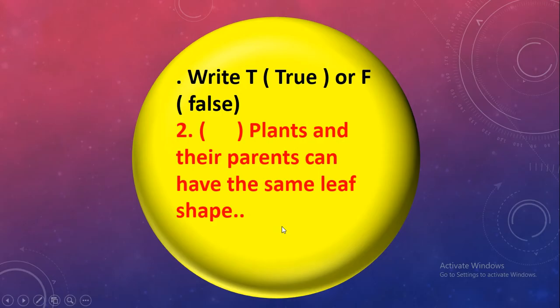Let's try number 3. True or false. Plants and their parents can have the same leaf shape. Plants and their parents can have the same leaf shape. True, excellent.